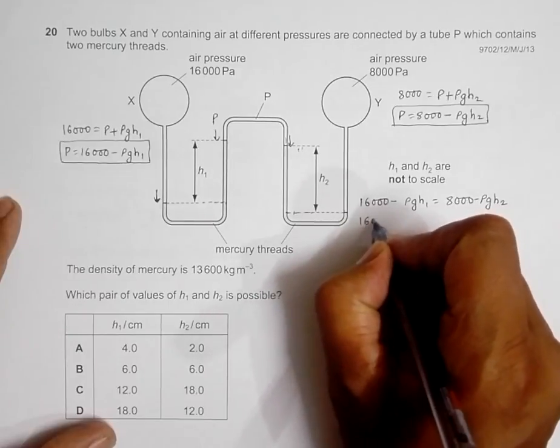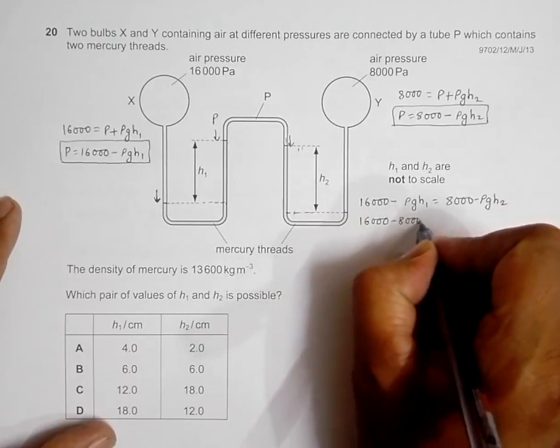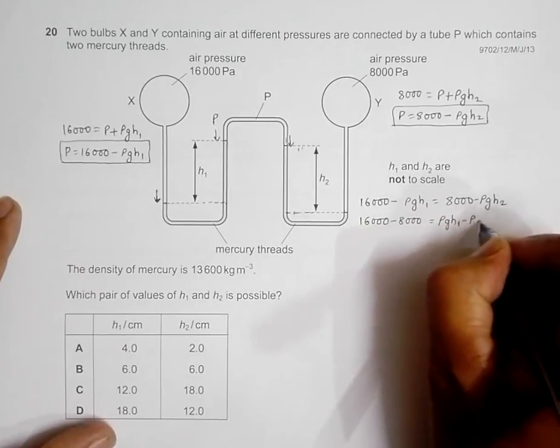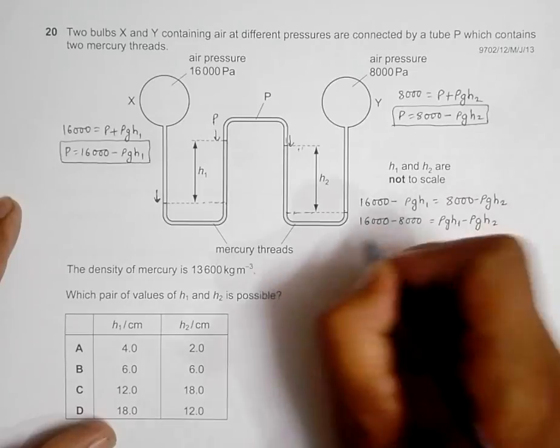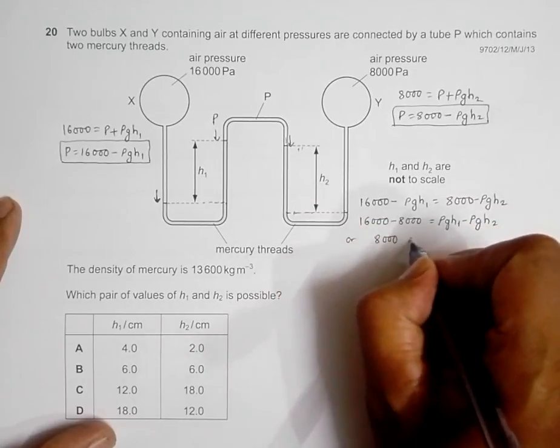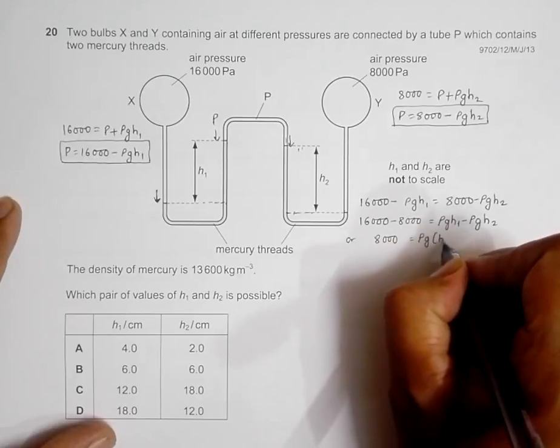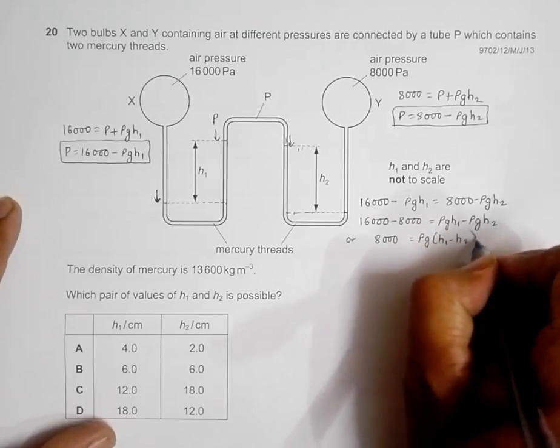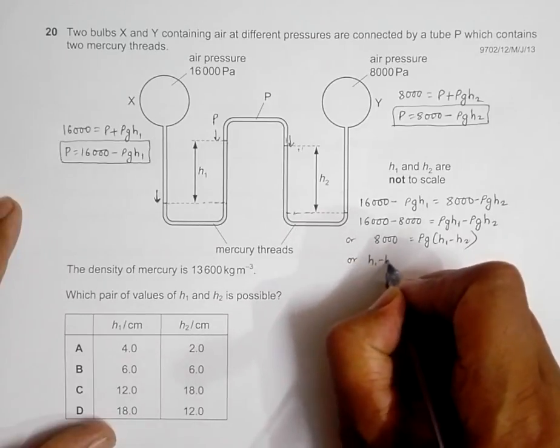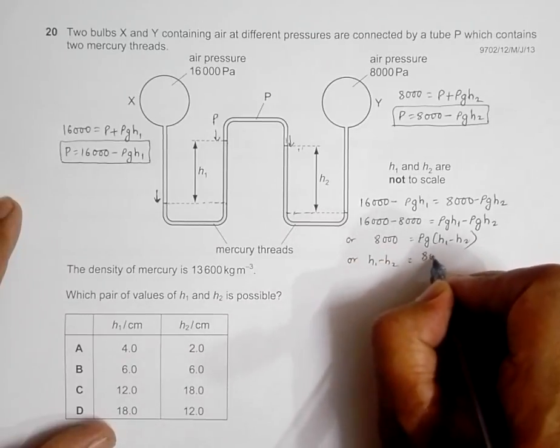If I do rearrangements here, 16,000 minus 8,000 should be equal to ρgh1 minus ρgh2. So 8,000 should be equal to ρg times (h1 minus h2).